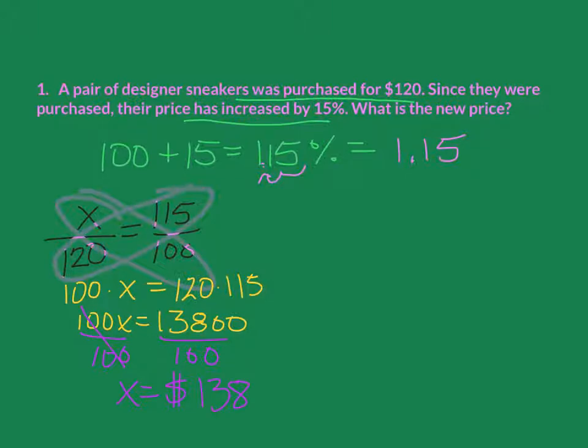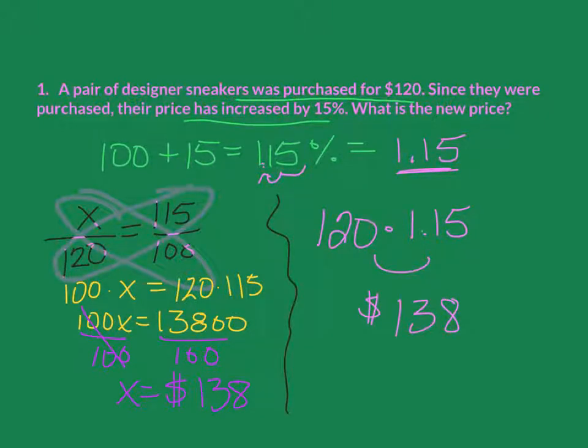Now, the other thing to do here, which is actually quicker but maybe some people don't understand it as well, and that's okay, is to just take our original, which is 120, and then multiply that times the decimal, which is 1.15. And if you put that right in your calculator, you should actually come right out with $138. So two different ways come out with the same exact answer. Really, you can use whichever one you understand more.